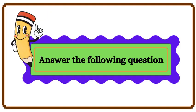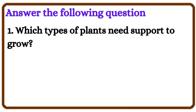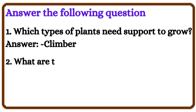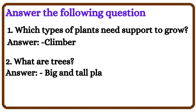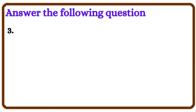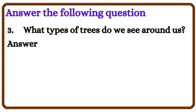Answer the following questions. Question 1: Which types of plants need support to grow? Answer: Climber. Question 2: What are trees? Answer: Big and tall plants are called trees — for example, Banyan and Mango.